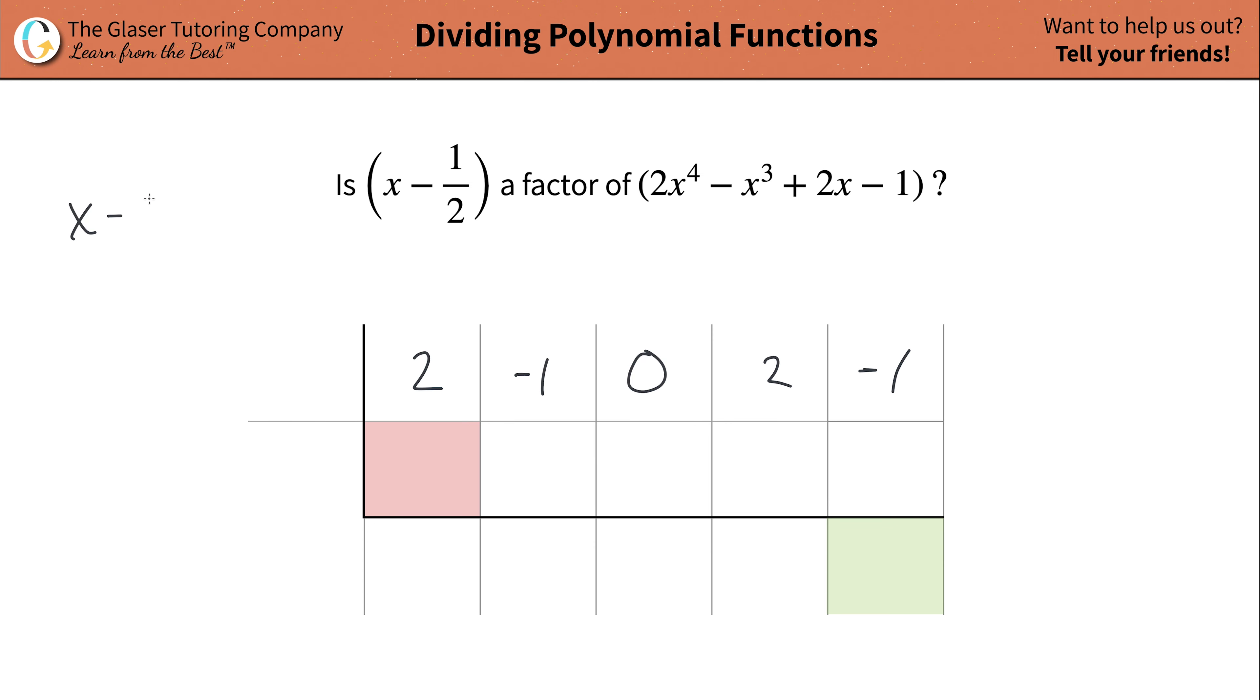So take x minus one half, and you're going to set that thing equal to zero. Simply solve that for x. One half. So x is going to equal positive one half. And what that does is it's going to help us determine what value should go outside of your synthetic division table. Now, once you have this top row fully filled out, you're just going to follow a very simple series of steps. Just simply drop this value on down to this box. And now just follow these steps.